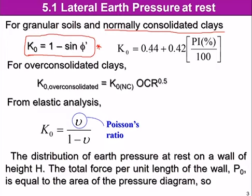We can estimate φ using: 0.44 plus 0.42 multiplied with PI in percentage divided by 100. For over-consolidated clay, we find K0 by taking K0 for NC and then multiplying by OCR raised to the power of 0.5, which is the square root of the OCR number.